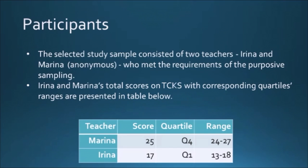There were two teachers: Irina and Marina. Here in this chart we can see the scores on the teacher content knowledge survey. Marina got 25 answers correct out of 33, and Irina only 17. Marina is located in the upper quartile, where the score range is 24 to 27. Irina is in the lower quartile, with scores ranging between 13 and 8.